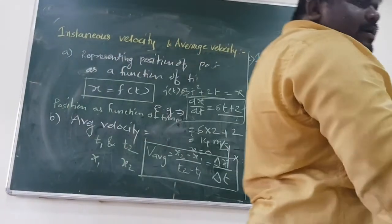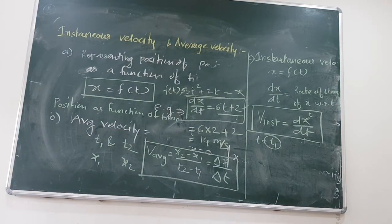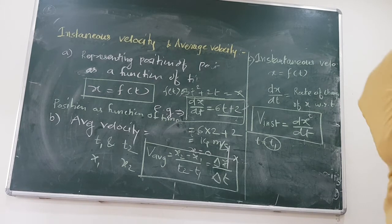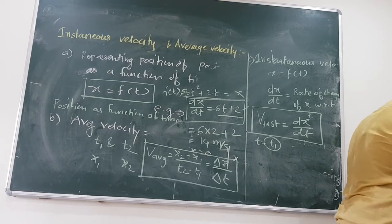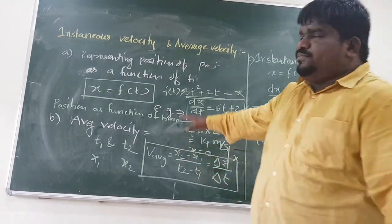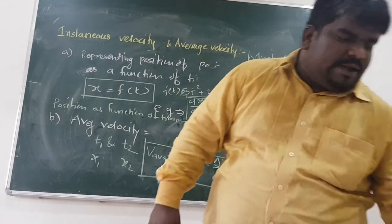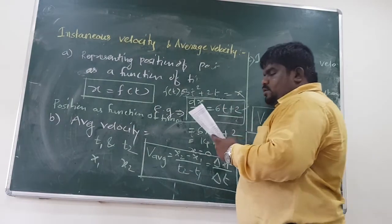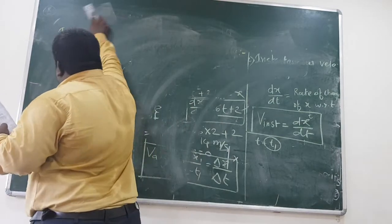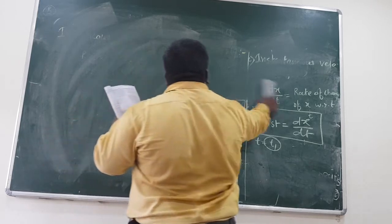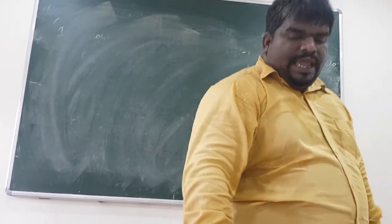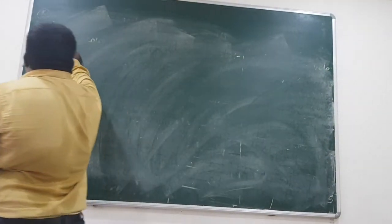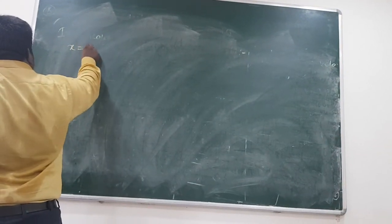Let us solve a question from NCERT. The position of an object moving along the x-axis is given by x equal to a plus bt squared, where a equals 8.5 meters — so it's a constant — and b equals 2.5 meters per second squared, and t is measured in seconds.